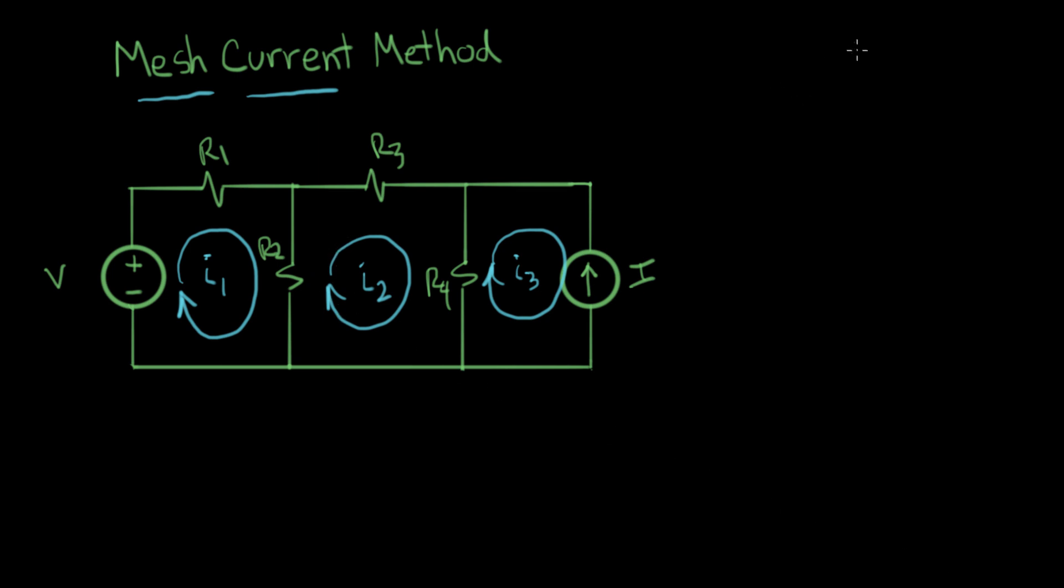Let me go over here and redraw R2. Here's R2. Now I'll redraw the mesh current. Here we have mesh current I1 going down like that, and we have mesh current I2 like that. I'll label the element current for R2, we'll call that I_R2.